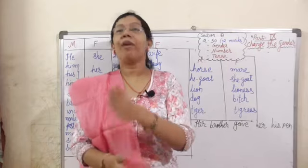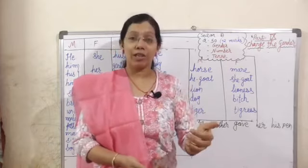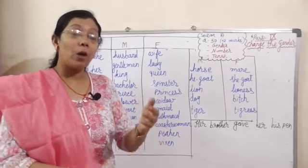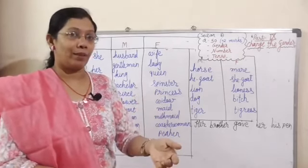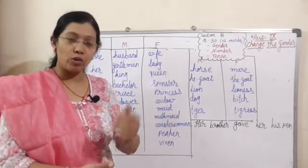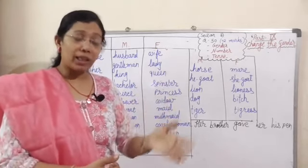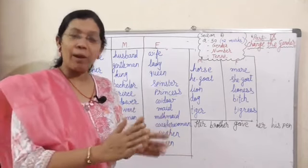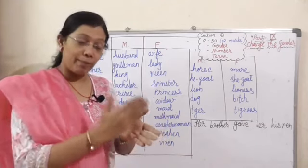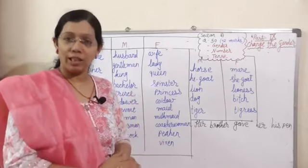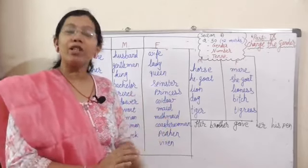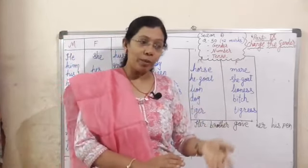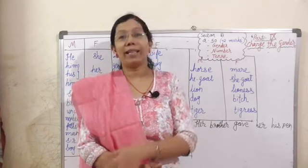Masculine gender and feminine gender. Masculine gender means any animal or human being that belongs to the male category — that is called masculine gender. And feminine gender means when any animal or human being belongs to the female category.